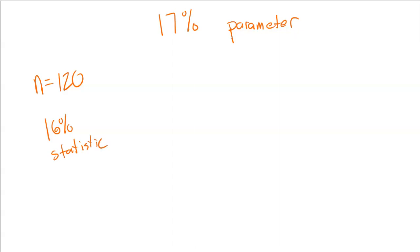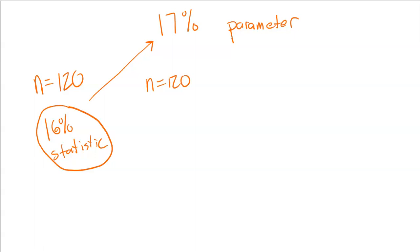Notice that 16% is not the exact same as the parameter — it's a little bit less. Does that mean you did something wrong? No. Does it mean your sample was bad? No. This is what we call sampling variability. Because you are only looking at a sample, not everybody, your statistic might not match up with the truth exactly. Maybe another student in Oklahoma gets a sample of 120 random students and comes up with 19% that vape. That is also a statistic because it came from a sample. Notice that 19% is not 17%, nor is it the 16% that you got. Did you or that student in Oklahoma do something wrong? No — it's called sampling variability.